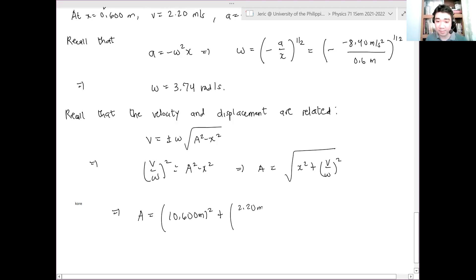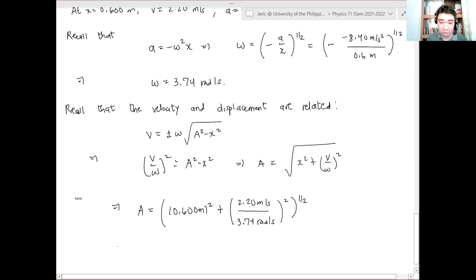This is 2.20 meters per second, all over 3.74 radians per second quantity squared. All of them, you add them, and then you get the square root. And then when you do that, one can show that the amplitude A is equal to 0.840 meters.